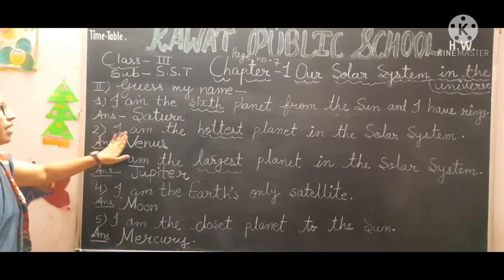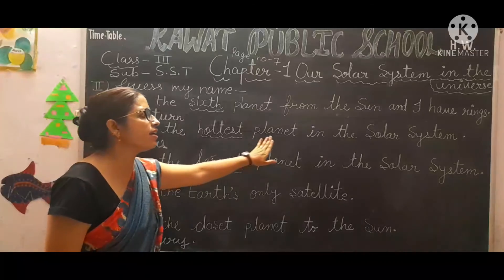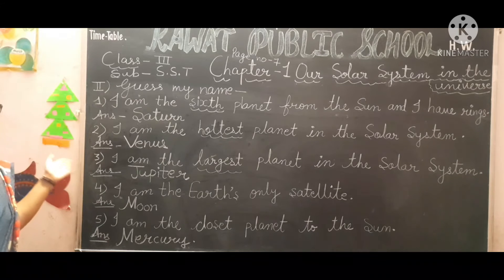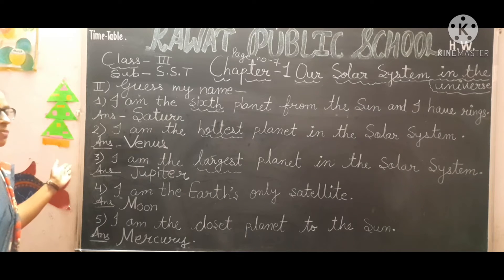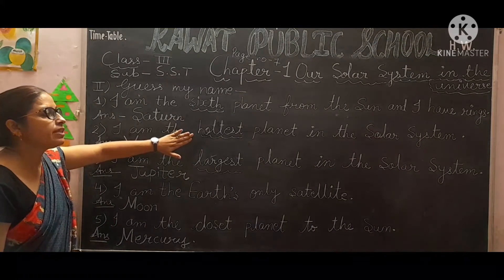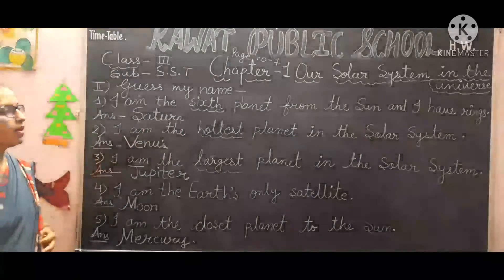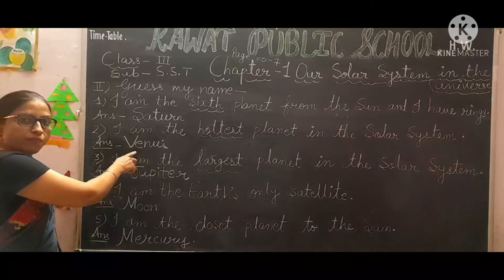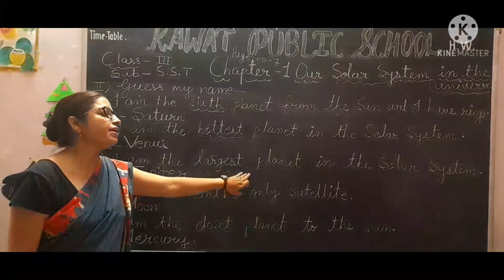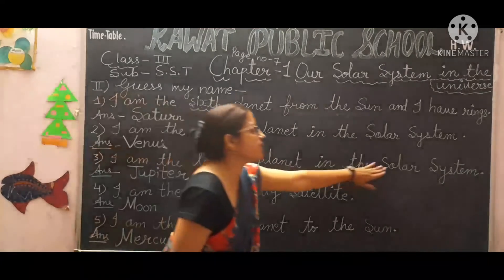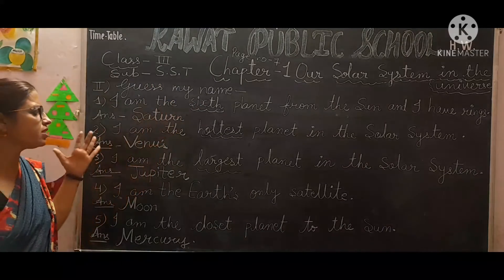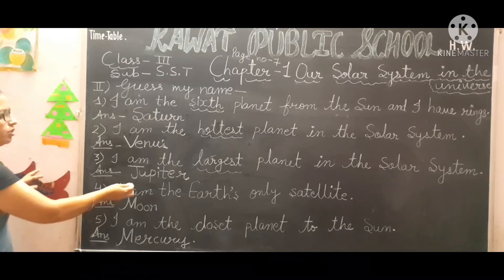Second: I am the hottest planet in the solar system. Which is the hottest planet? The answer is Venus. Third: I am the largest planet in the solar system. The largest planet is Jupiter.